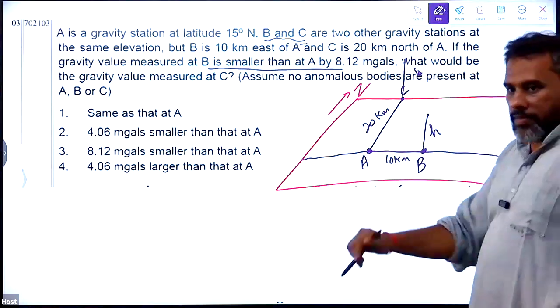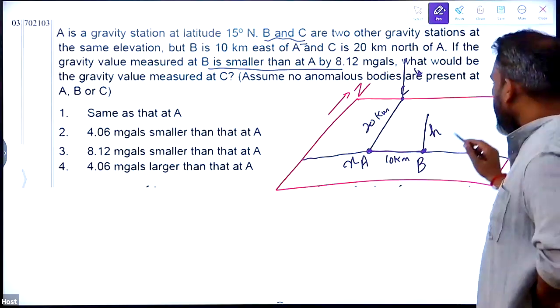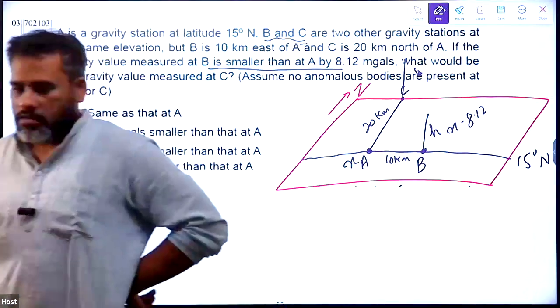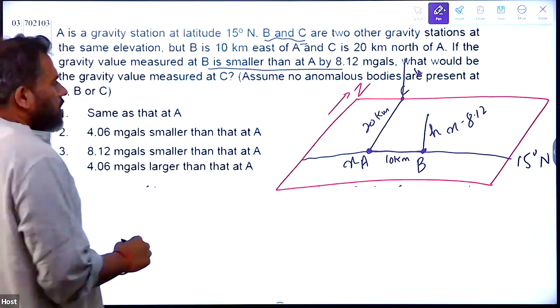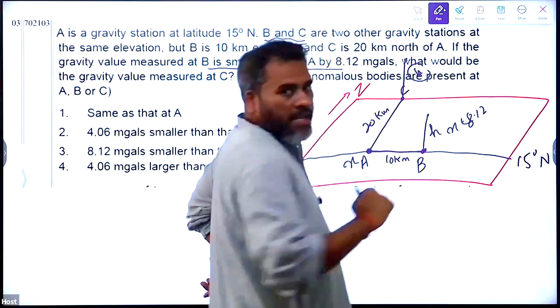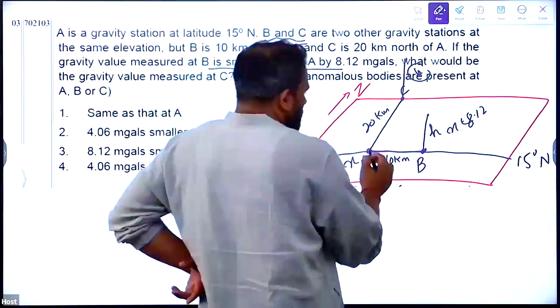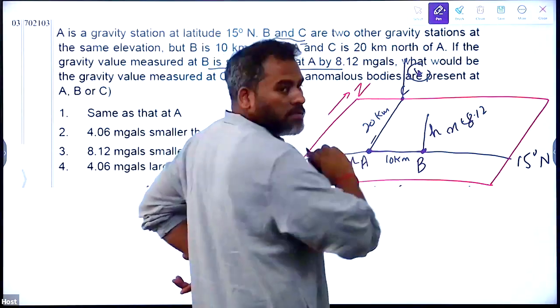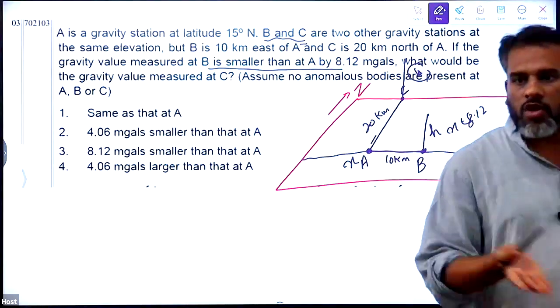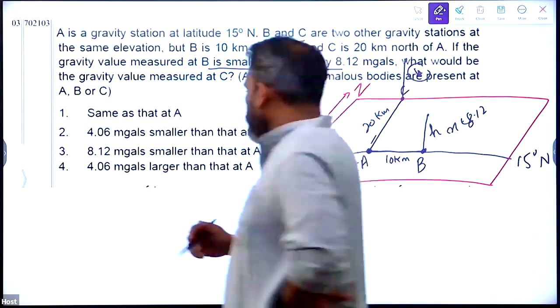So tell me if gravity at A is x, the gravity at B will be x minus 8.12 milligals, right? This height produces 8.12 milligals of reduction. If I go from here to here, there will be an increase in gravity because you are moving north. Latitude correction will tell you what is the value of latitude correction.